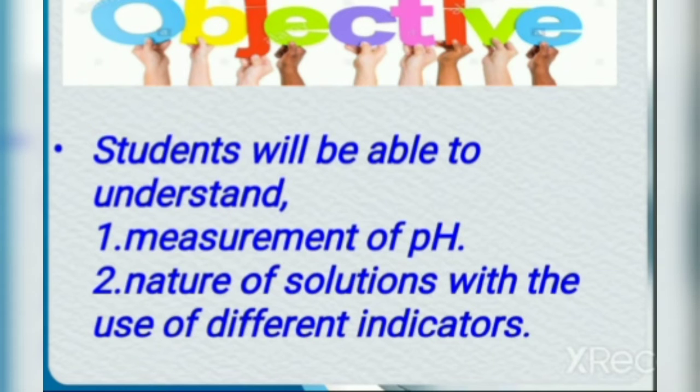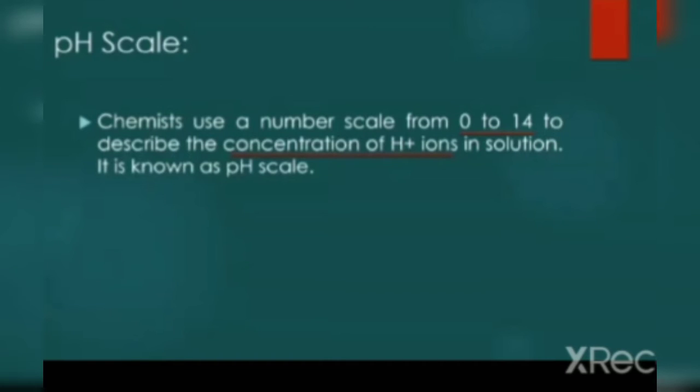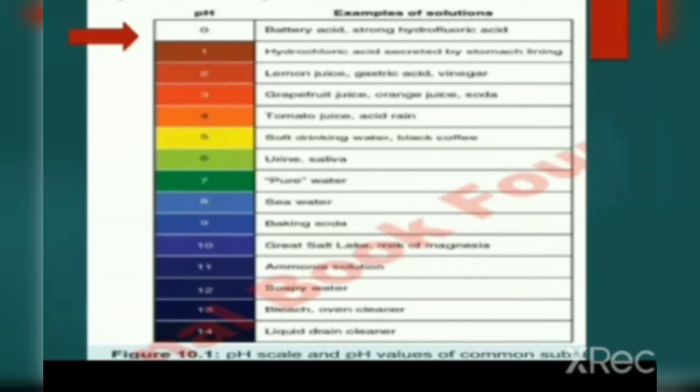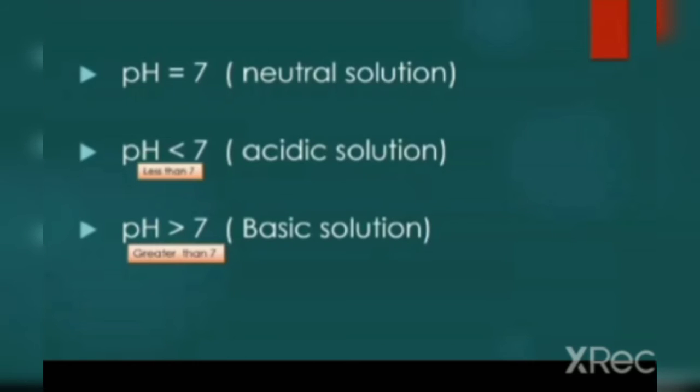Chemists use a number scale from 0 to 14 to describe the concentration of hydrogen positive ions in solution. It is known as pH scale. This is figure 10.1 from page number 34. Scale given from 0 to 14. Look at 7 - it is neutral solution. If numbers decrease from 7 to 1, solution will be acidic. If numbers are greater than 7, solution will be basic in nature.